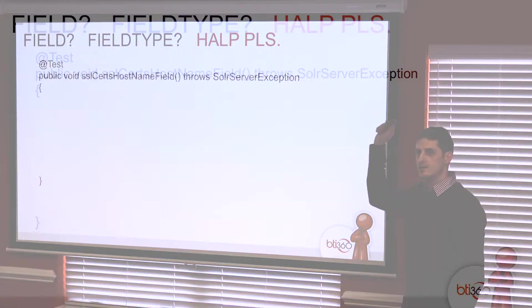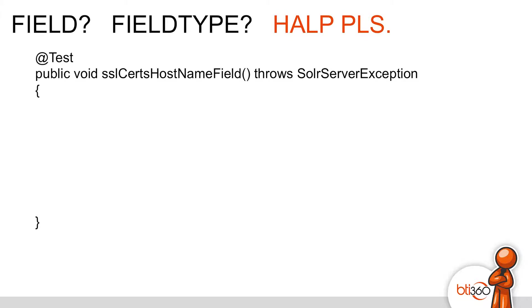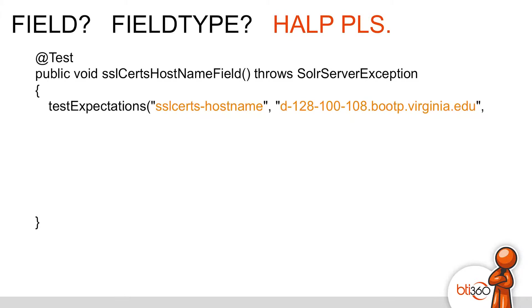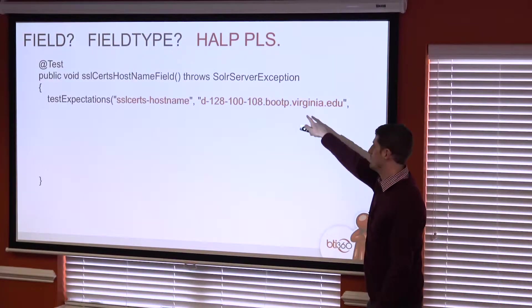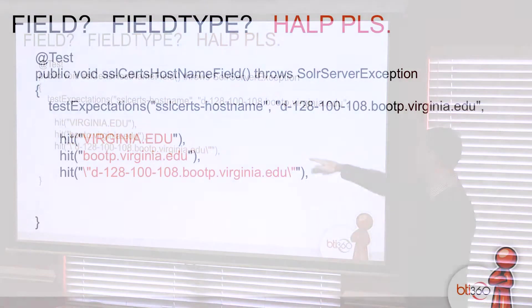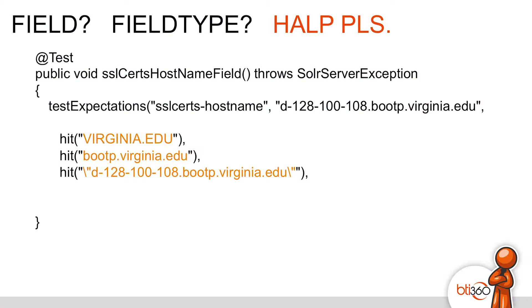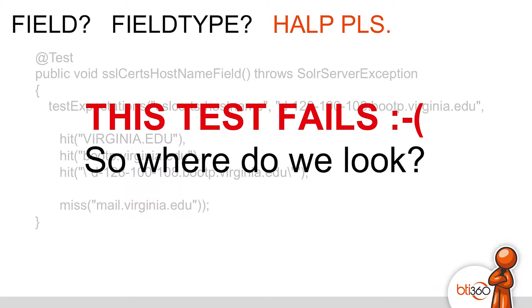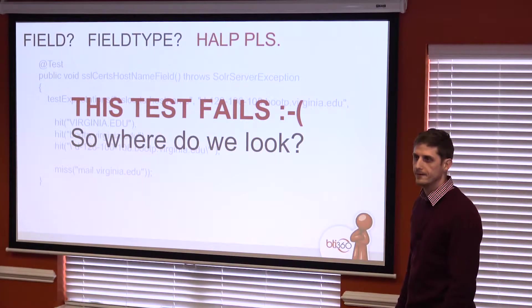During Steve's examples, he had one of these tests. One of the fields in his index was called SSL search hostname. It expected that when I search over this field with a given search query, I'd expect to hit on certain search terms — like uppercase virginia.edu even though it's not directly in there, a partial match, and the full text string — and a miss on mail.virginia.edu, because mail is nowhere in there. These are the expectations that should happen. When we run it, it fails.